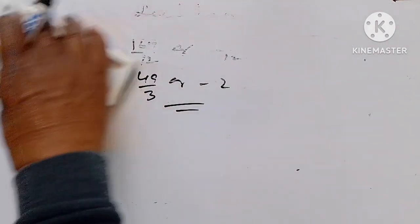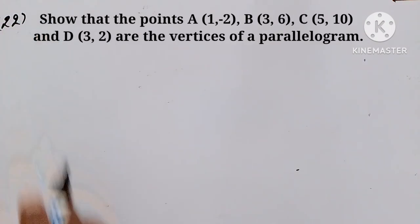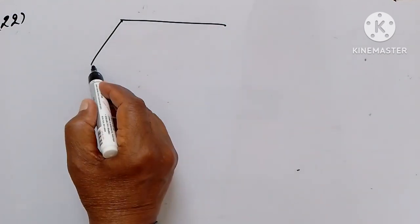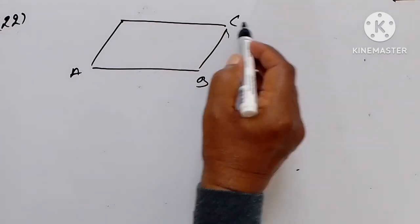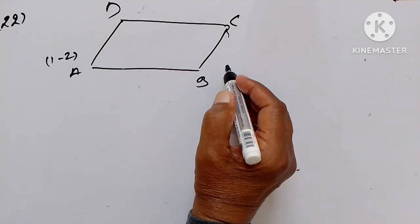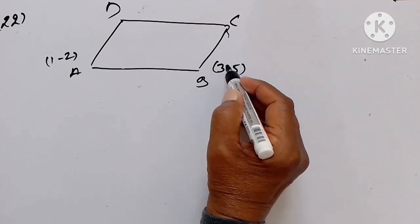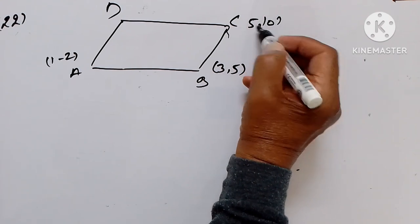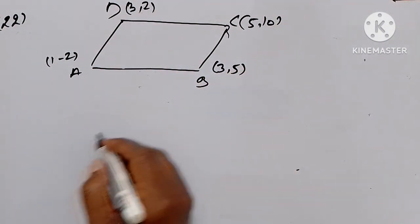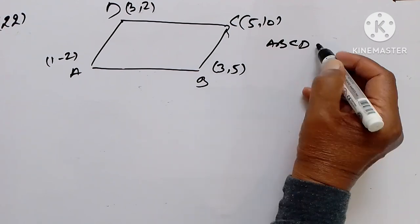Now we take up the next question, number 22. ABCD is a quadrilateral whose vertices are given as A(1, -2), B(3, 5), C(5, 10), and D(3, 6). We have to prove that ABCD is a parallelogram. To prove this, we join AC and BD. O is the point of intersection.